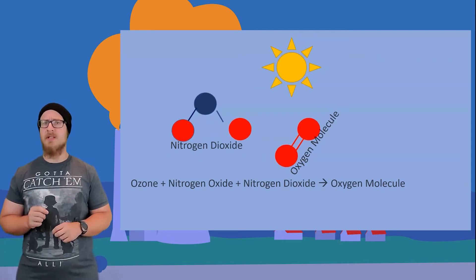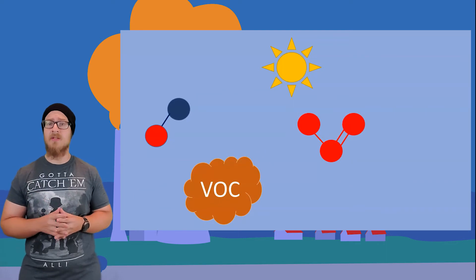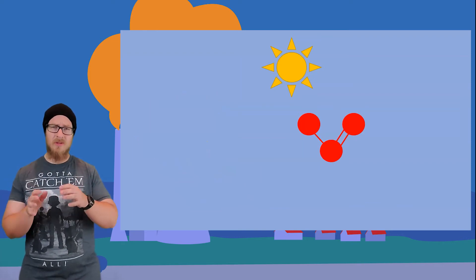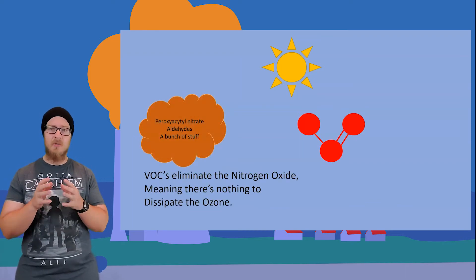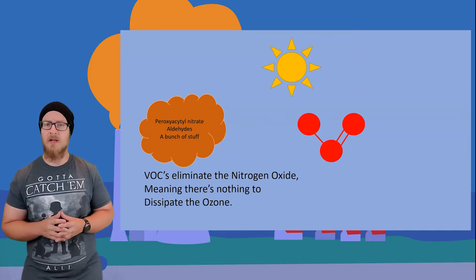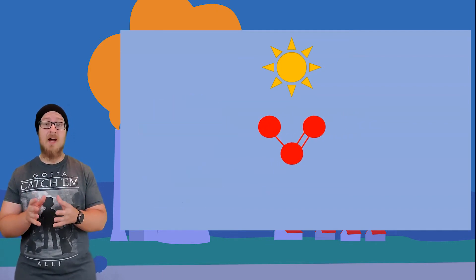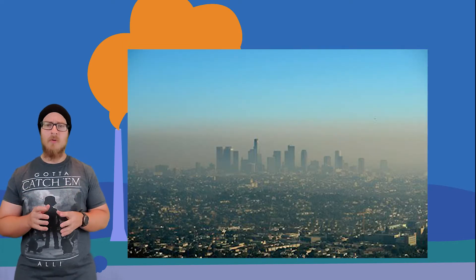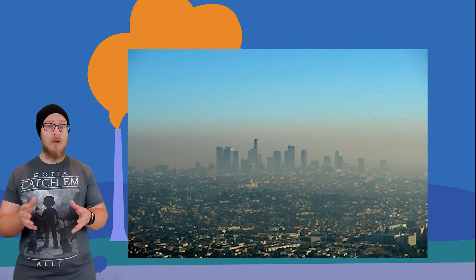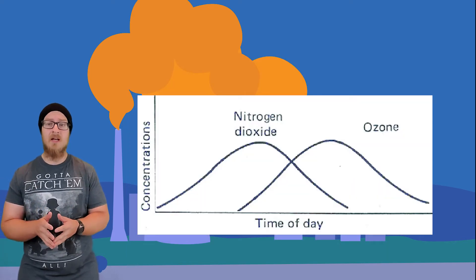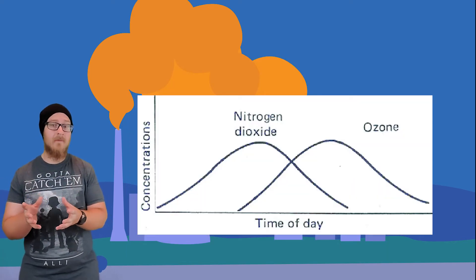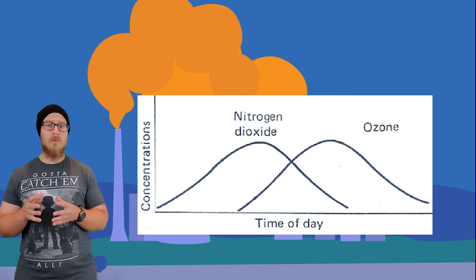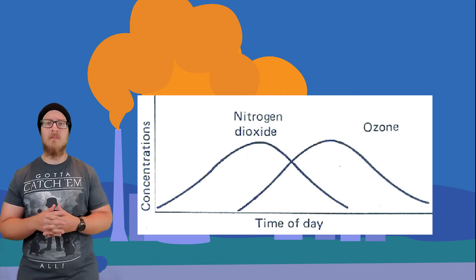Here's where VOCs come in. With volatile organic compounds in the air, the VOCs react with the nitrogen oxide to produce a bunch of different chemicals. What's important is that the VOCs stop the ozone from dissipating. This entire conglomerate — the nitrogen compounds, the VOCs, and the ozone — is called photochemical smog. Photochemical smog is common in urban areas because of the large number of cars, and the amount of nitrogen oxide tends to peak in the morning because of rush hour traffic. All those gases remain in the atmosphere, causing ozone to peak in the afternoon when we get the most sunlight.